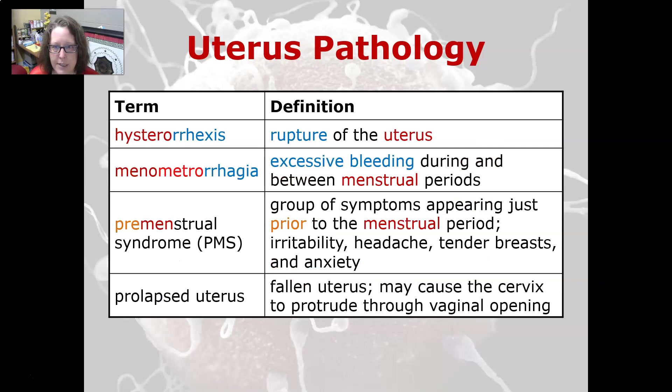Hysterorrhexis is the rupture of the uterus. Menometrorrhagia is excessive bleeding during and between menstrual periods.